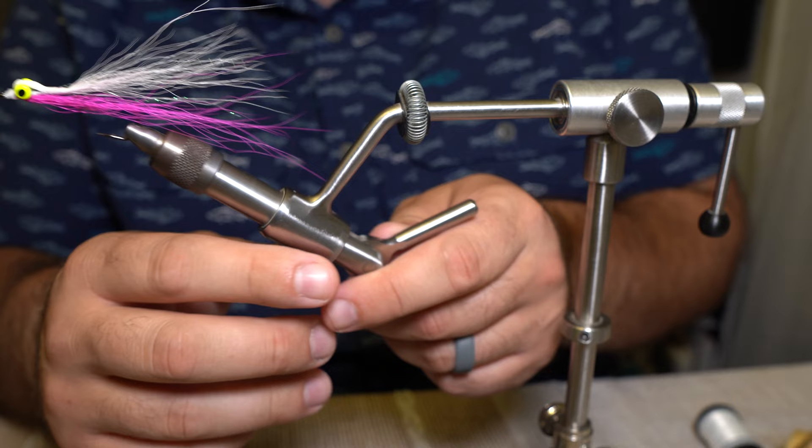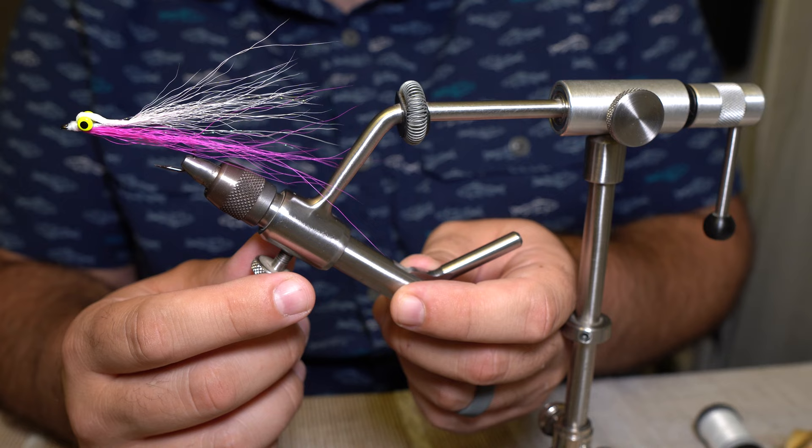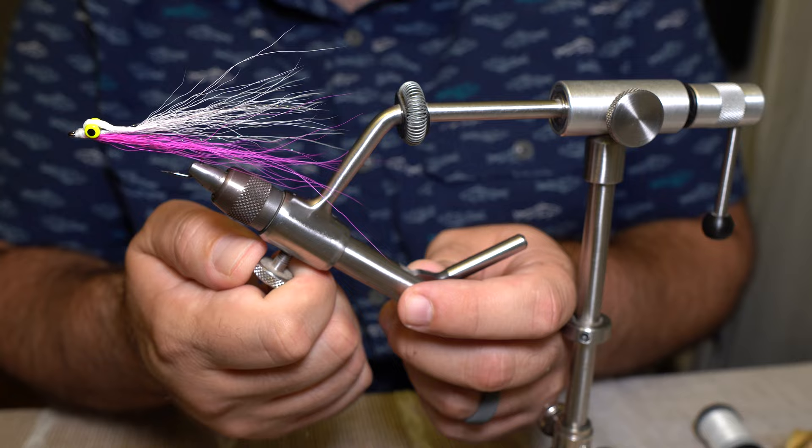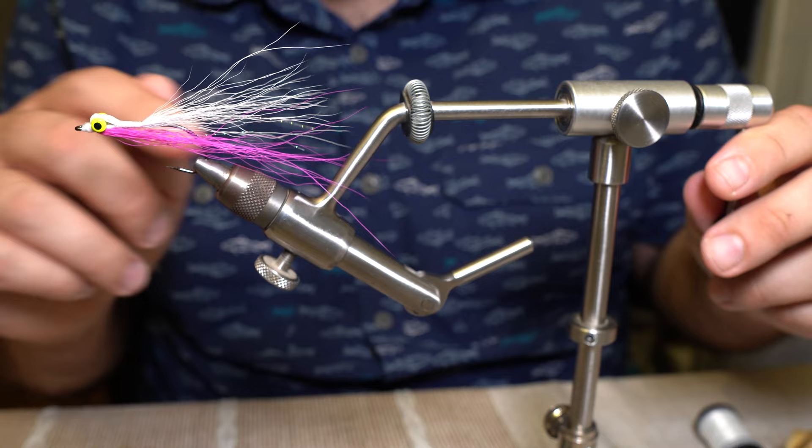Depending on the size of the hook, the size of the fly, you may need to be up here. These are 1-aught hooks I'm tying on, so probably about there. So then my hook shank is going to stay in the same plane as that axle, which is what you want for tying these.